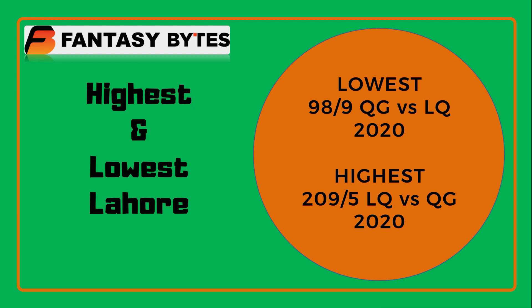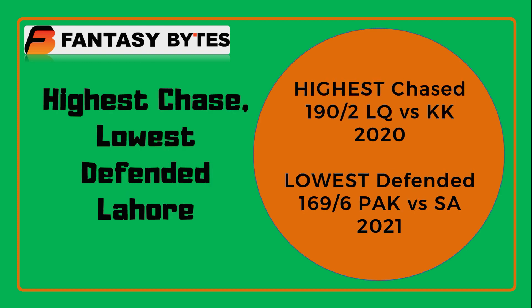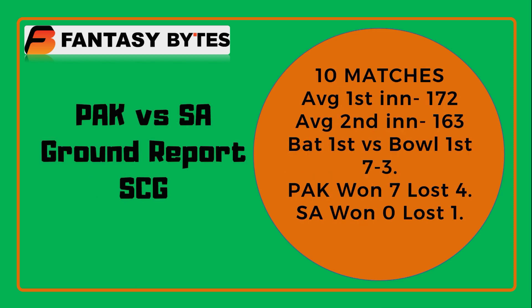Looking at Lahore in the last 10 games: the lowest score is 98-9 from Quetta Gladiators vs Lahore Qalandars, and the highest score is 209-5 by Lahore Qalandars vs Quetta Gladiators. The highest run chase is 190-9 by Lahore Qalandars, and the lowest successful defense is 169-6, which Pakistan defended in the last match. This is a very hard ground to defend scores on — average first innings score is 172, average second innings score is 163, so it's high scoring. It's 7-3 in favour of the chasing team in the last 10 games.